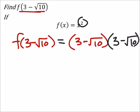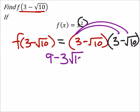Now I'm going to distribute this. 3 times 3 is 9. Then 3 times negative square root of 10, which would be negative 3 times the square root of 10.